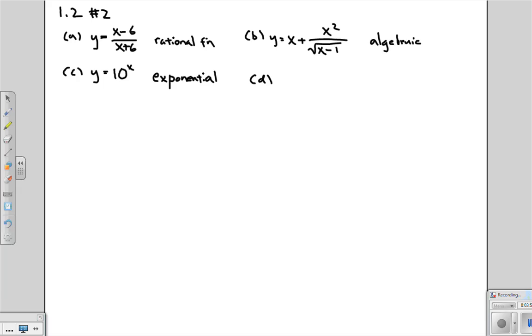Part D. Here, the function is y equals x to the 10th. And there you go. Now, what's the difference? Well, x is not in the exponent anymore. It's on the bottom. The exponent, instead, is 10, which is a constant. So using the same argument we put forth before, this now is going to be a power function.